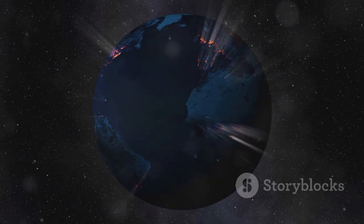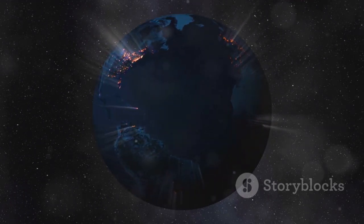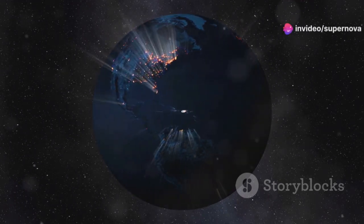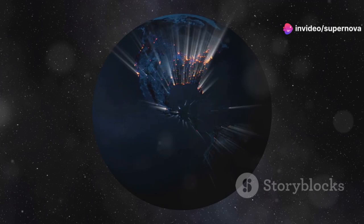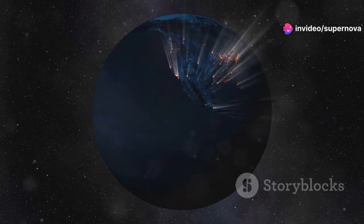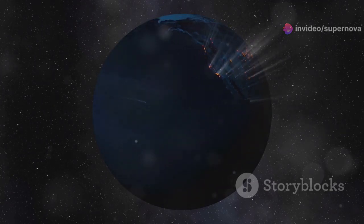There, on Proxima Centauri b, a planet orbiting our closest neighboring star, we saw something astonishing. Lights. These weren't just random flickers or natural phenomena, they were organized, structured, and unmistakably artificial. And not just any lights. These lights looked like cities.